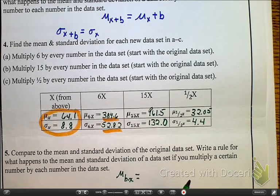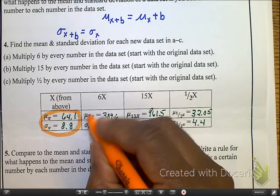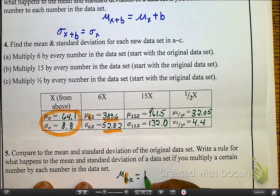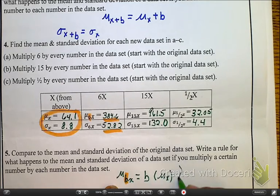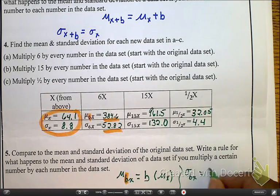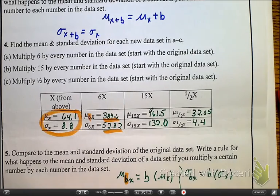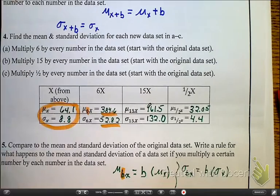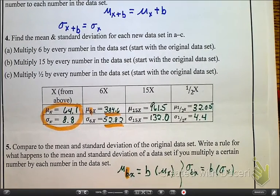That the mean of bX, because that's equivalent to the idea of slope, is going to be the value of b times whatever the mean is. And the same thing for the standard deviation. If we're talking about the standard deviation of bX, that's going to equal b times whatever that standard deviation was. Okay, so that's it for tonight. I just want you guys to take these notes and we'll pick up on this tomorrow in class. I'll see you guys.